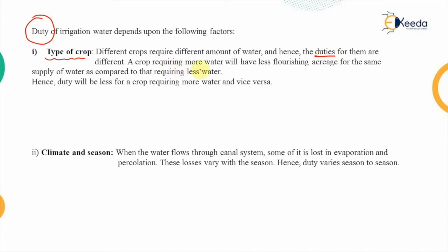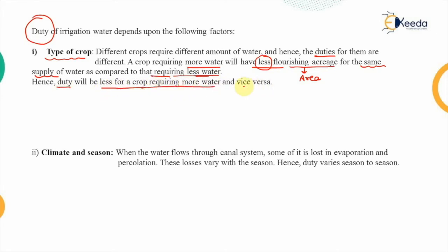A crop which is requiring more water will have less flourishing acreage. This flourishing acreage means the area which will be covered because of the supply of water. If we are keeping the same supply of water, the duty covering the area will be lesser in comparison to a crop which requires lesser water. That means the duty will be less for a crop requiring more water and vice versa — the duty will be high for a crop requiring lesser water.